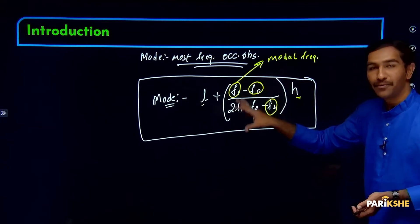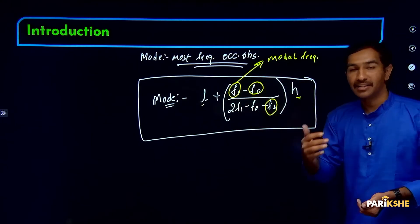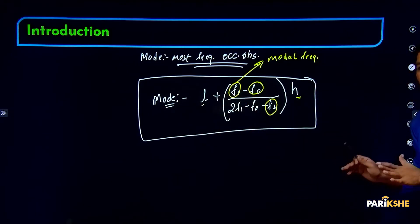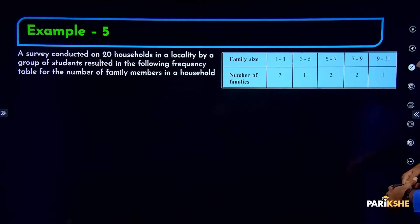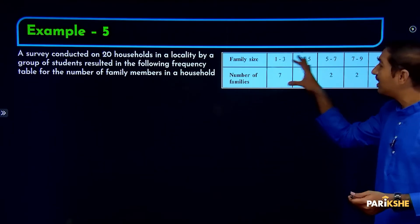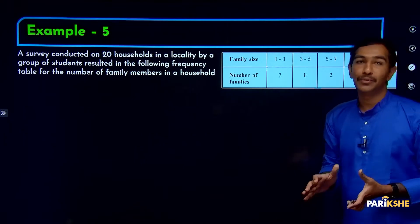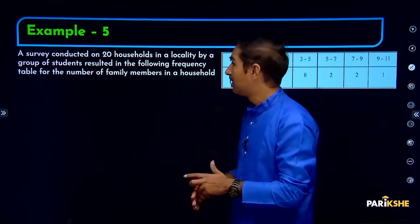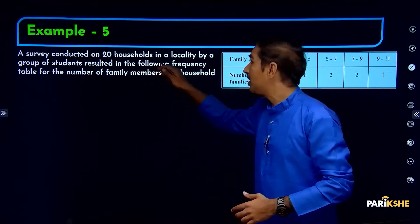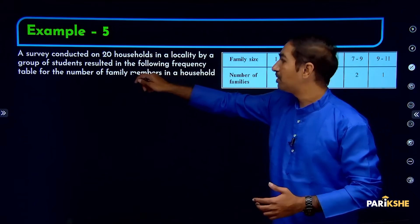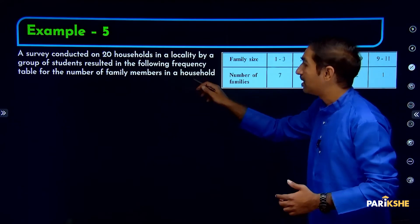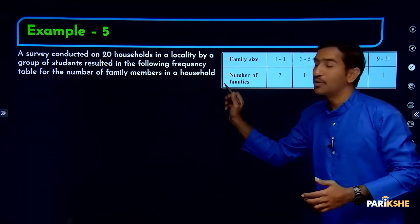Let's work through a problem. A survey conducted on 20 households in a locality by a group of students resulted in the following frequency table for the number of family members in a household.